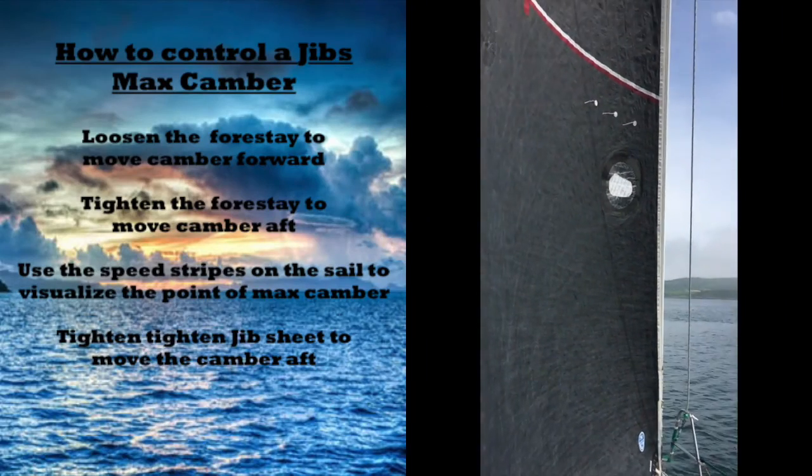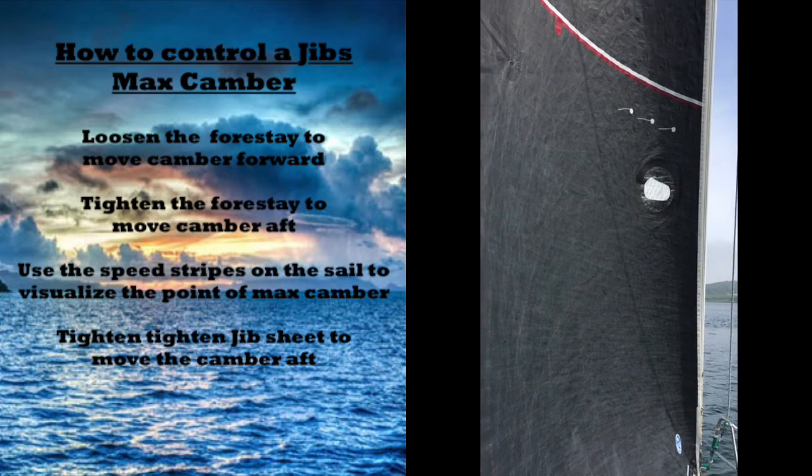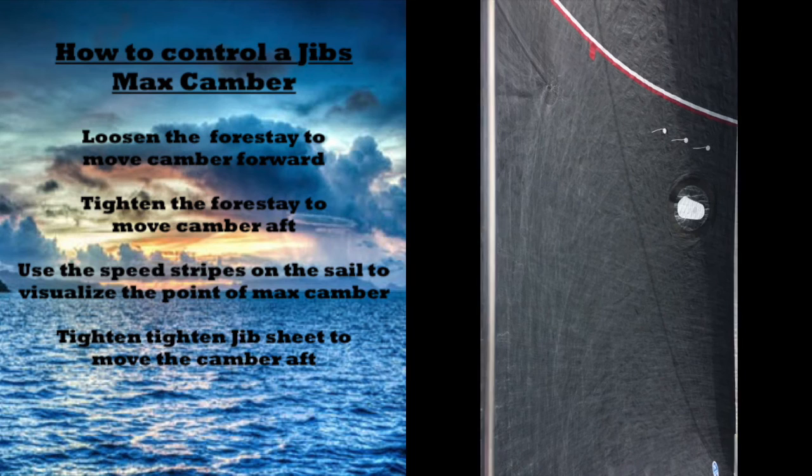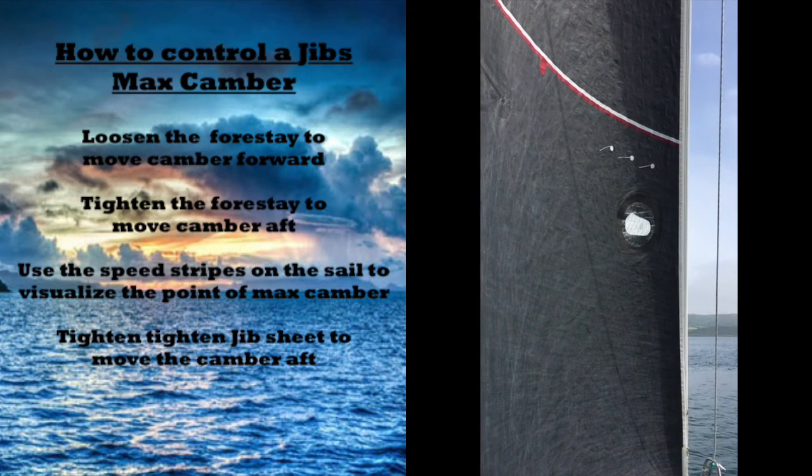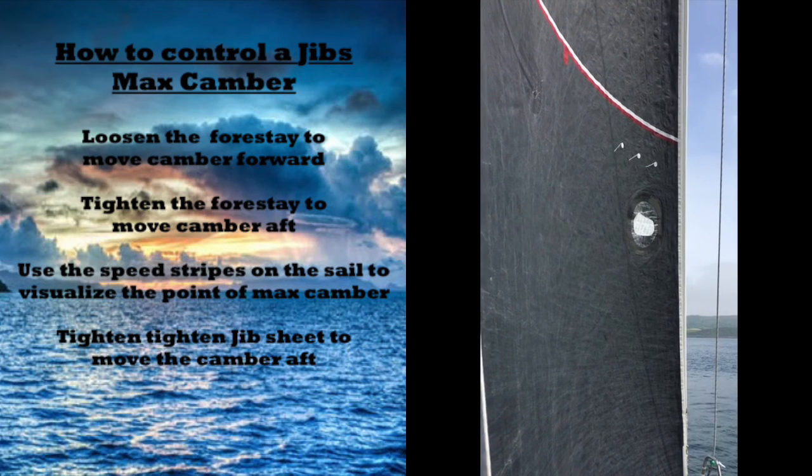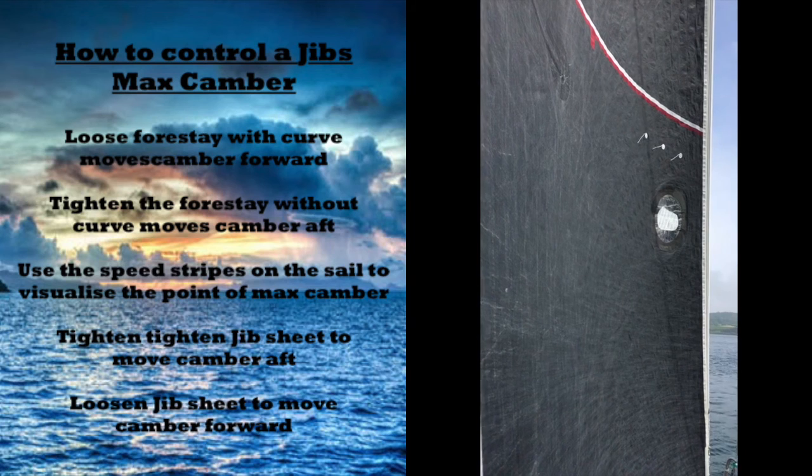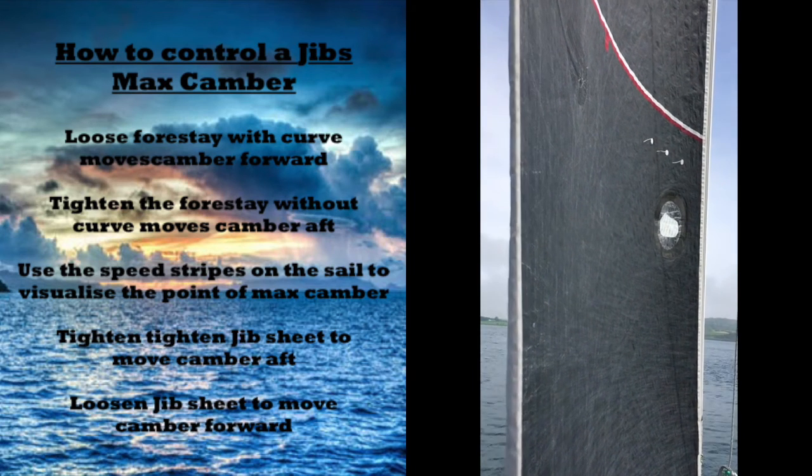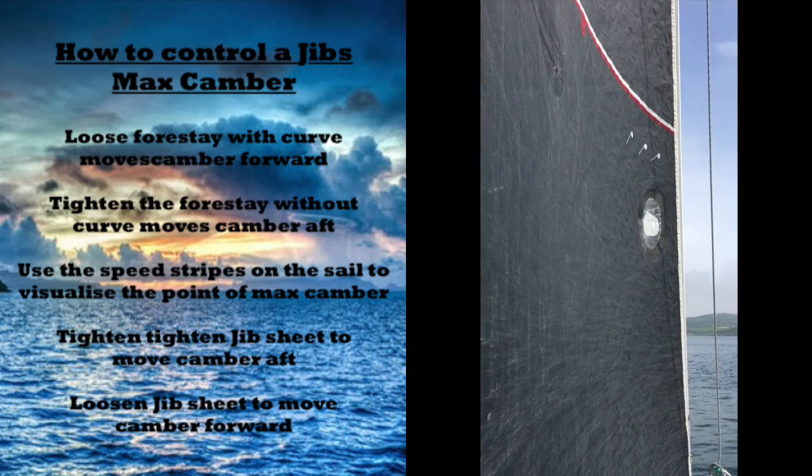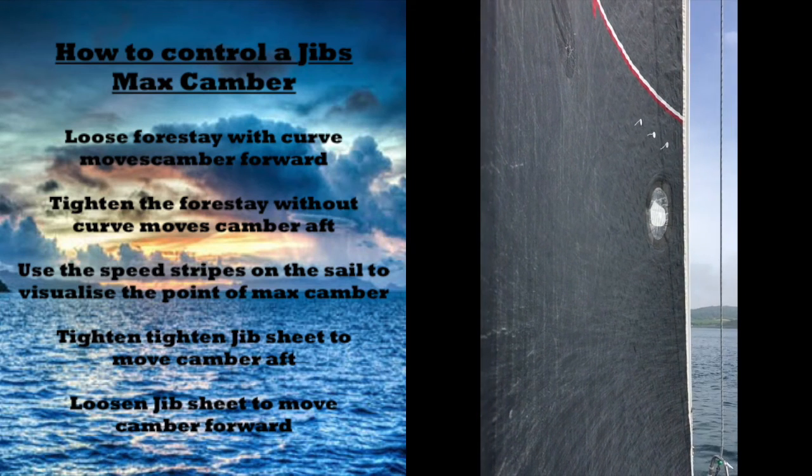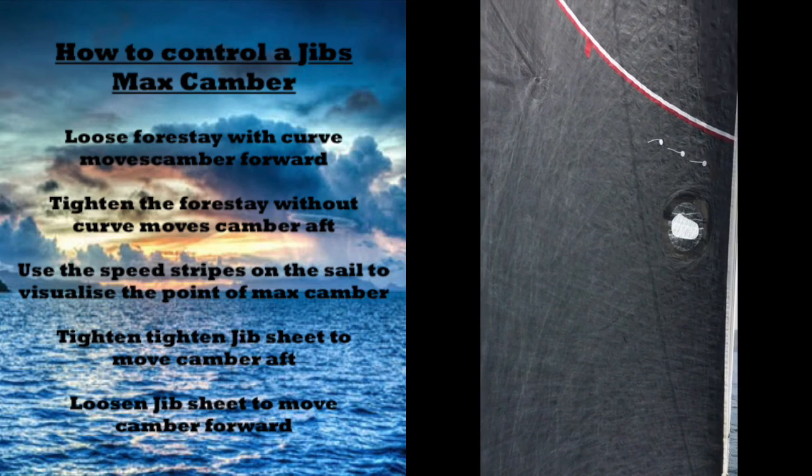Another way to adjust and control the camber in the sail is with the sheet tension. Easing the sheet will deepen up the sail, moving the camber forward. Sheeting on tighter will then flatten the sail, moving the camber aft. You can see how quickly the camber moves from the front to the back of the sail as we take a look at the bottom third of the headsail as we move through various sheeting tensions and settings.